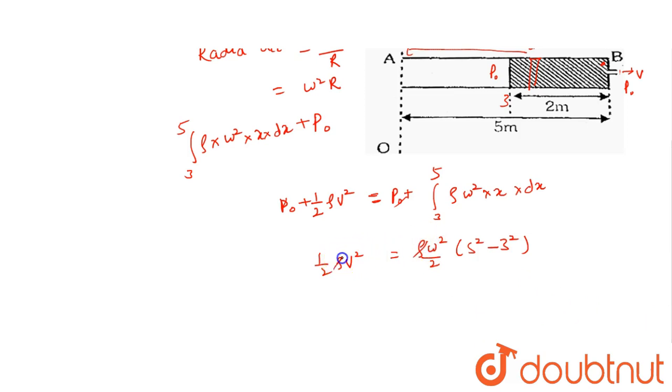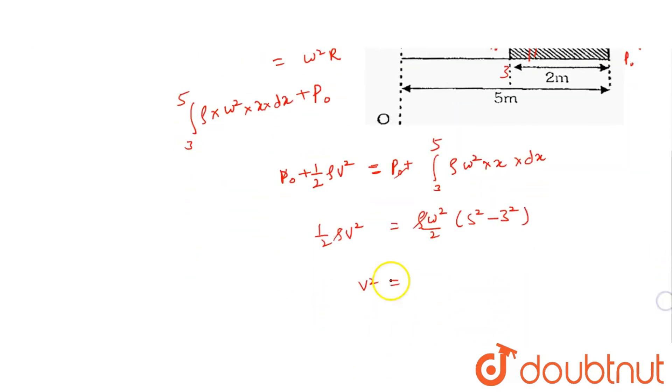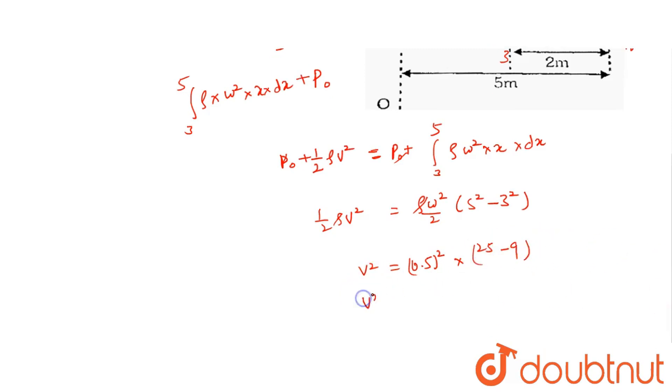Okay, rho will cancel because the same liquid. This will be equal to omega square. Omega value kitni di hui yaha? We have 0.5 radian. Okay, so 0.5 chi square into 25 minus 9. 25 minus 9 kitna hota? 16.